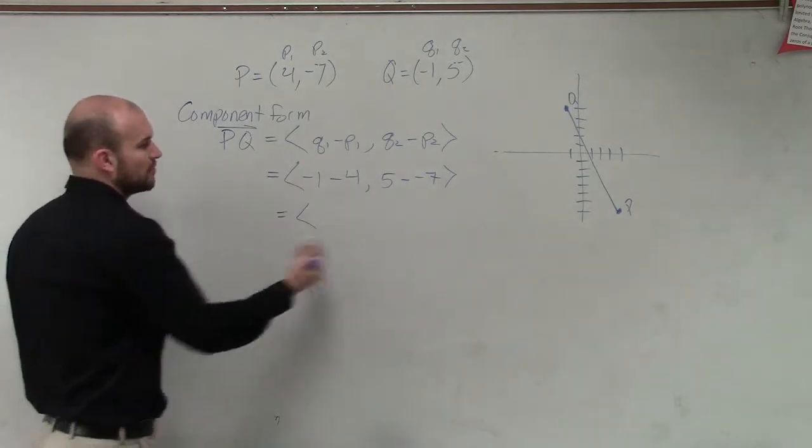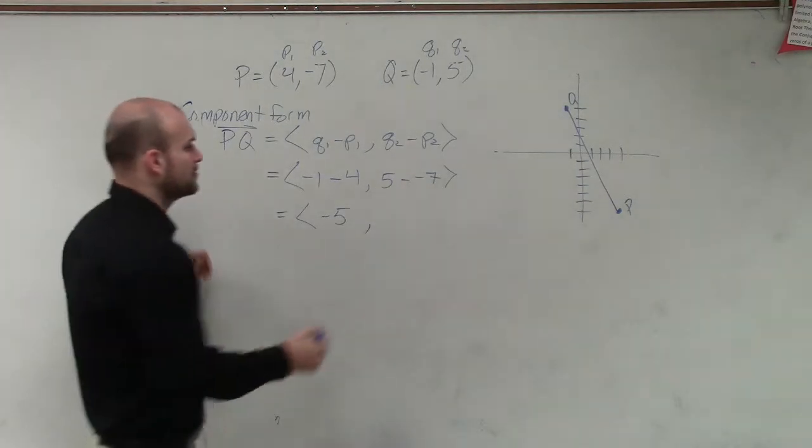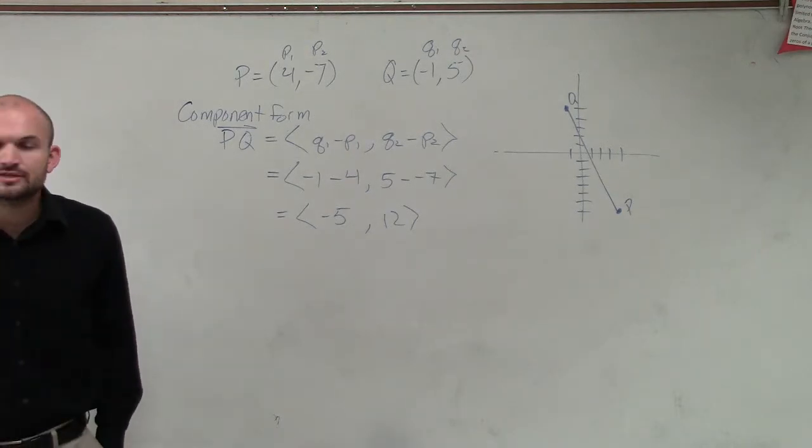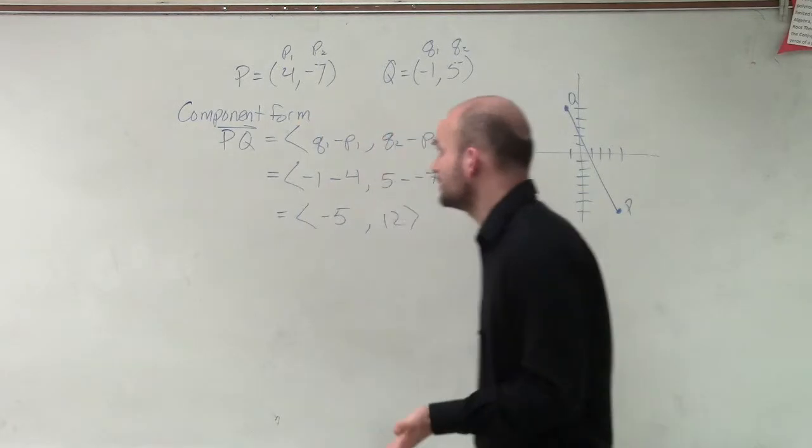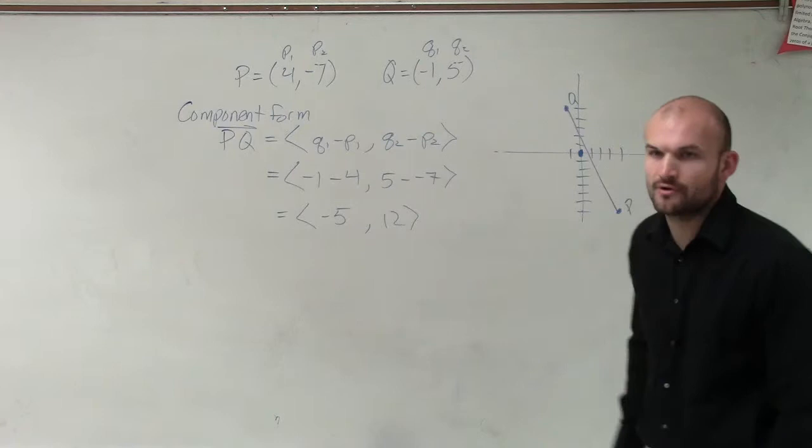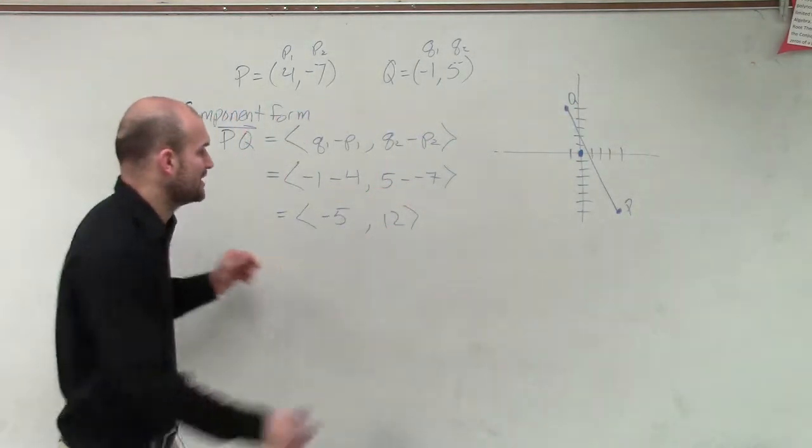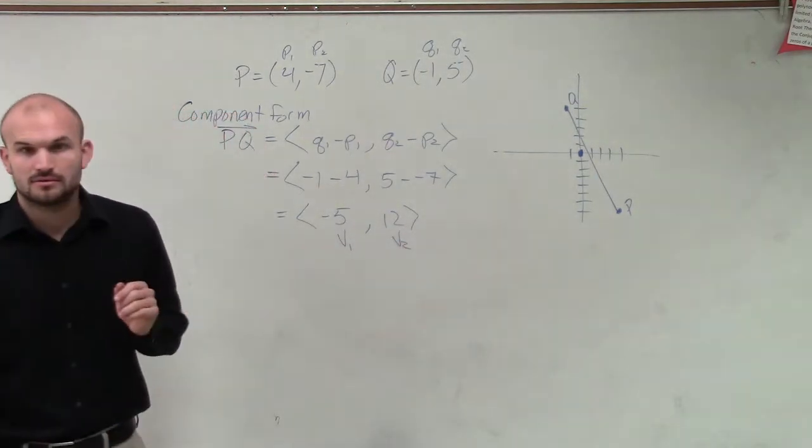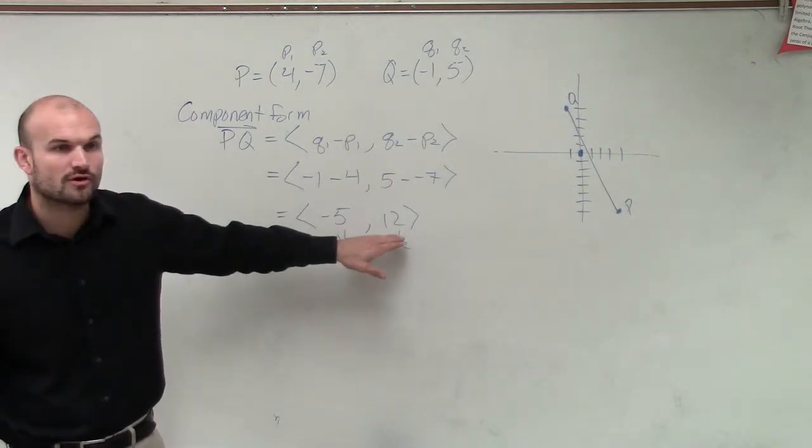Negative 1 minus 4 is going to be negative 5 comma 5 minus negative 7 is 12. So that's your component form of your vector. Now your component form has an initial point at 0, 0, and it has two new endpoints, which we call V1 and V2. So these are your two new endpoints for your component form V.